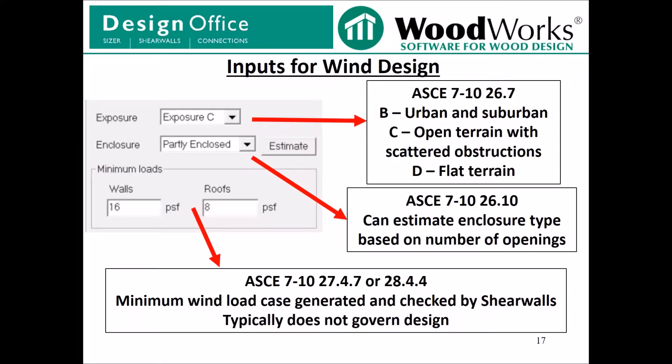Just below the wind speed inputs, there is an option to specify the exposure for the structure, which comes from ASCE 7-10 section 26.7. You have the option of specifying either B (urban and suburban), C (open terrain with scattered obstructions), or D (flat terrain). Below that, there is an input to specify the enclosure of the building from ASCE 7-10 section 26.10. You can specify the enclosure yourself or let Shearwalls estimate it based on the openings on the exterior of the building you've drawn.